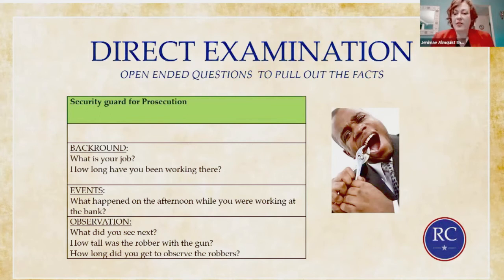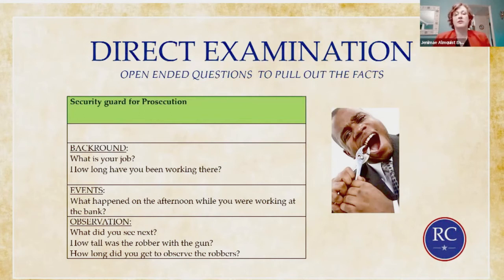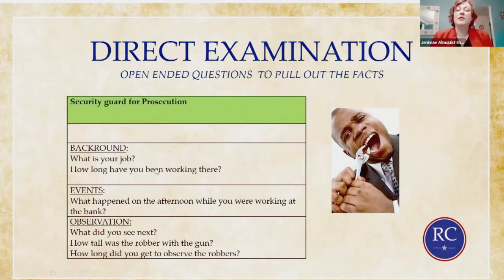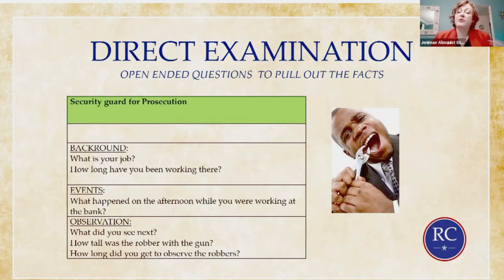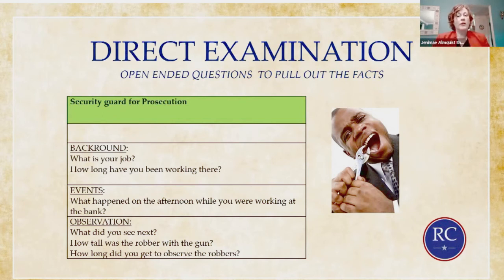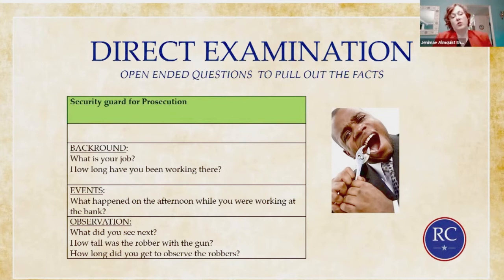You're trying to pull out the answers using your questions — just like pulling a tooth. Using the security guard as an example, if you're the lawyer for the prosecution, for background questions you'd ask open-ended questions like: 'What is your job?' and 'How long have you been working there?' After introducing the witness, you get into the events of the crime — what the jury really wants to hear. You'll ask: 'What happened on the afternoon while you were working at the bank?' 'What time of day was it?' 'What did you see?' 'How did you know they were coming in to rob the bank?' You can always ask follow-up questions if the witness doesn't give exactly the answer you want.